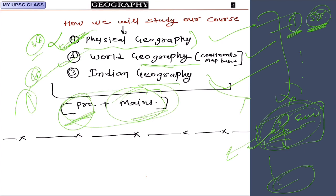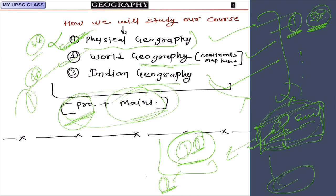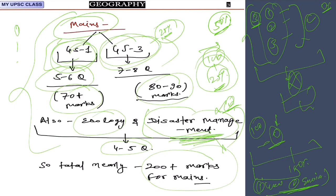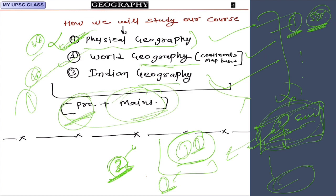Whatever books and resources are needed for each subject, I will tell you when we start that subject. Don't buy all books at once. For geography, only two books are needed from outside: GC Leong and a student atlas, both latest versions. NCERT and class notes are available on the application. This is the complete introduction of the subject. Next we will start physical geography. Thank you for watching.